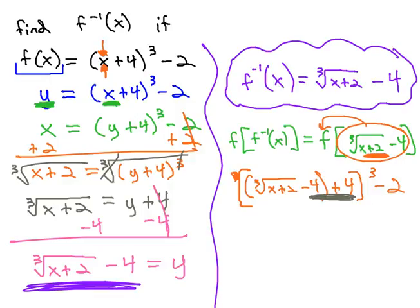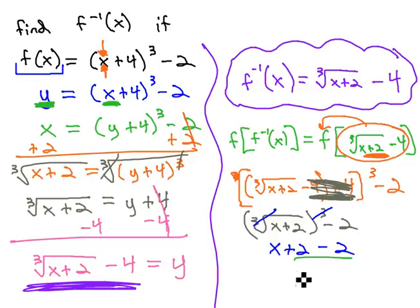We see negative 4 and 4. The parentheses don't matter because there's nothing to distribute. Negative 4 and 4 come out to 0. So we have the cube root of x plus 2 cubed minus 2. Cube and cube root are inverses, so we have x plus 2 minus 2. Combine like terms and all that's left is just the x.